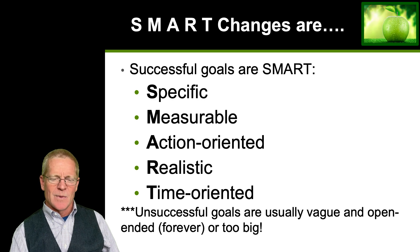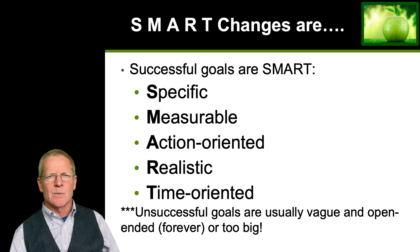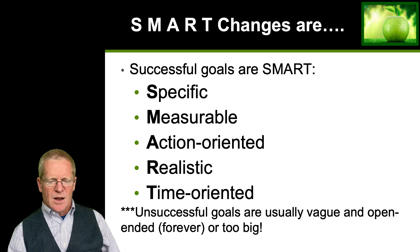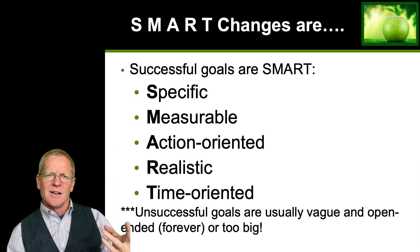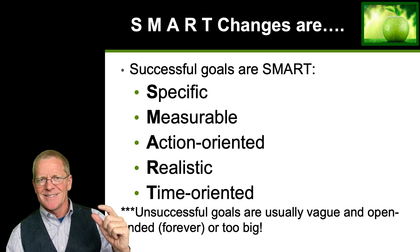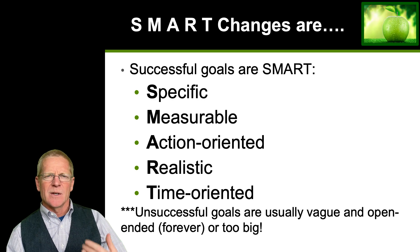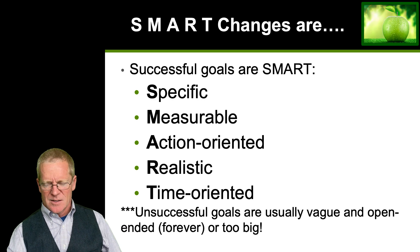In summary, these are called SMART changes. Make your changes Specific and Measurable. Be Action-oriented — things you can actually do, not things someone else controls. Make changes you have the power to influence. They should be Realistic, not pie in the sky. And make them Time-oriented: set a month-long goal and re-evaluate. Unsuccessful goals are usually very vague and open-ended, so you want to avoid those.